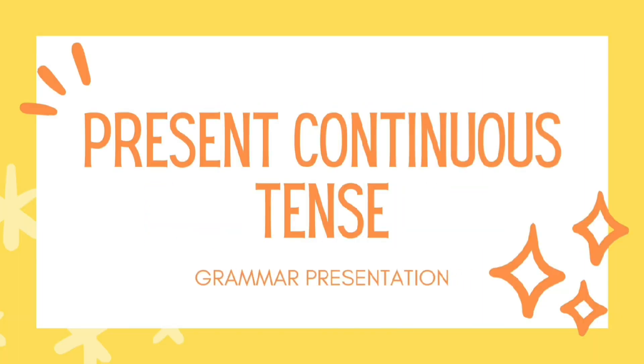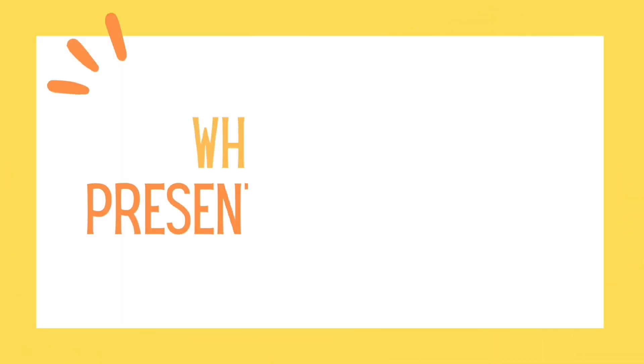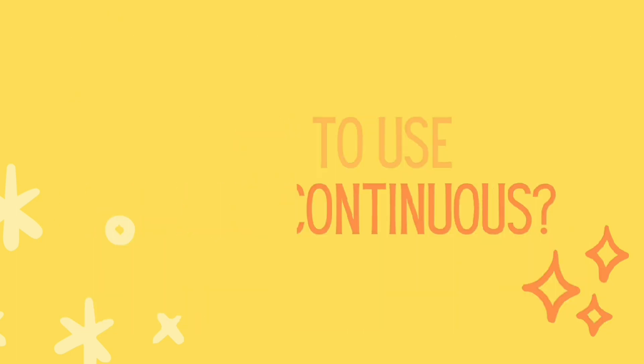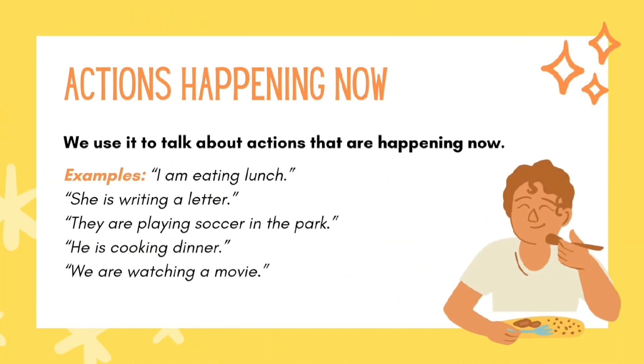In this video, we will learn about present continuous tense. When to use present continuous tense? Number 1: Action happening now. We use it to talk about actions that are happening now.